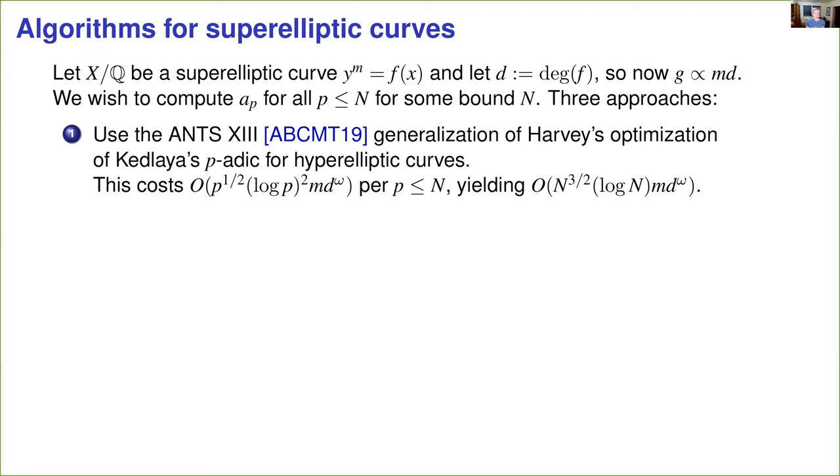So the problem we want to consider now is we're given a superelliptic curve over Q, defined by an equation y^m = f(x), where f has degree d at least 3, and we want to compute the Frobenius traces ap for all good primes up to some bound n. And there are three general approaches one might take to this. The first, and prior to this work, the most efficient approach would be to use a p-adic algorithm based on a generalization of Harvey's optimization of Kedlaya's algorithm for hyperelliptic curves. This algorithm was constructed in a wonderful ANTS-13 paper that obtains a running time that's essentially equivalent to Harvey's result. The dependence is proportional to √p, and the dependence on m and d is quite good. And so this leads to an algorithm that is certainly practical, but it's still not quasi-linear in n.